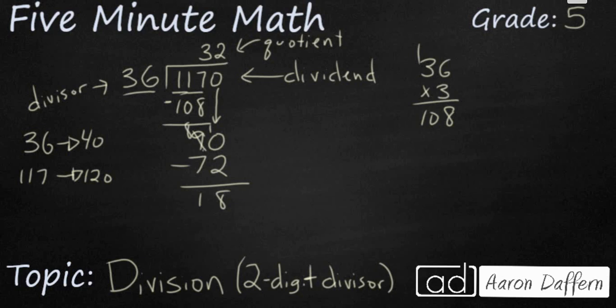Now you have several options here. Some teachers will want you to write this simply as a remainder. So we can say our answer is 32 R 18. 32 with a remainder of 18.